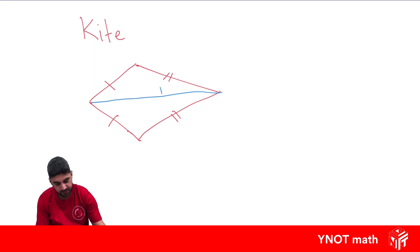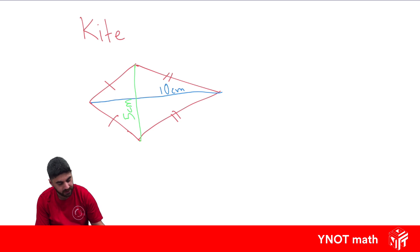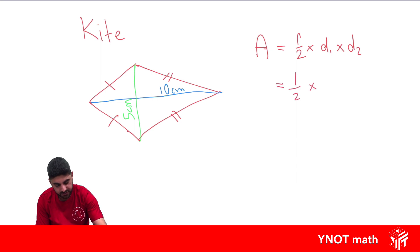Let's say this diagonal is 10 centimeters long and this one is 5 centimeters long. The area of a kite is the same as the area of a rhombus: a half times diagonal 1 times diagonal 2. So we get a half times 10 times 5. 10 times 5 is 50, and half of 50 is 25 centimeters squared.